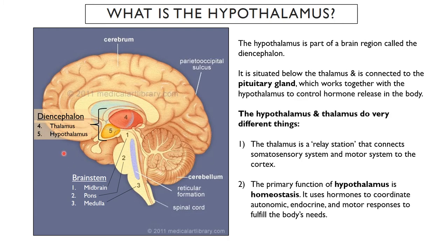The hypothalamus is located in the diencephalon, which is made up of the thalamus — number four here — and then the hypothalamus, 'hypo' meaning below, below the thalamus. So the hypothalamus is number five, right at the base of the brain. It's a structure that's also connected to the pituitary gland, and it works together with that structure in order to control hormone release in the body.